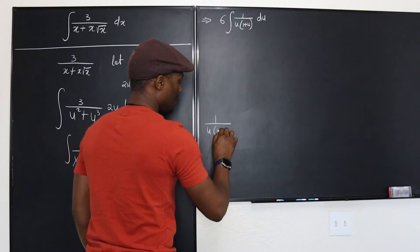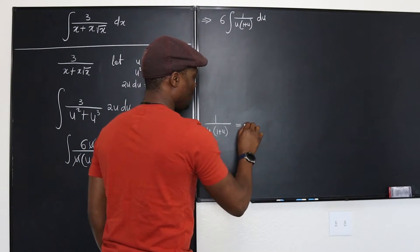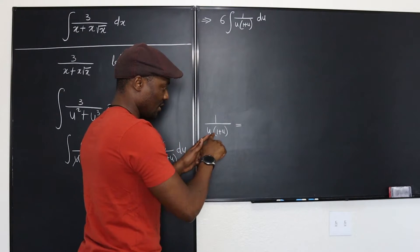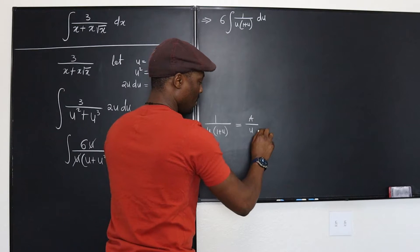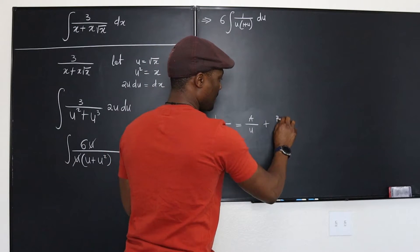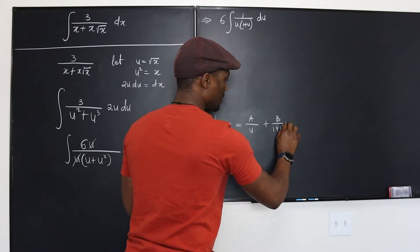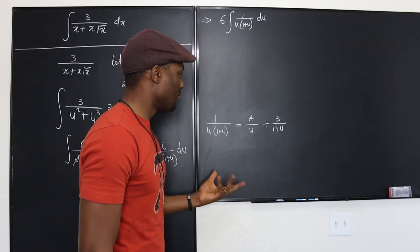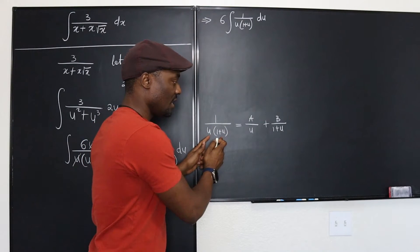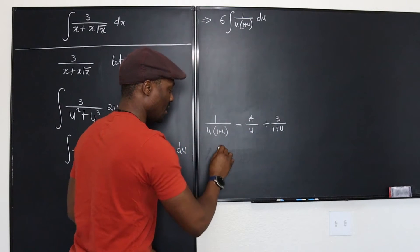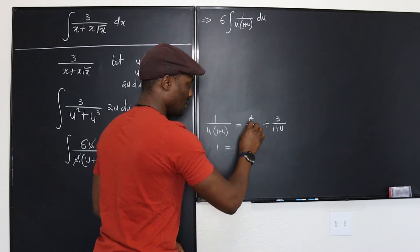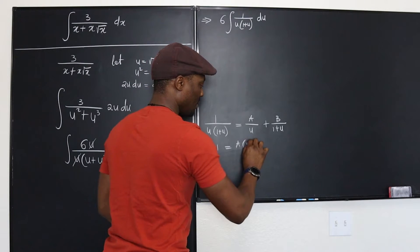At this point we're going to resolve 1 over u into 1 plus u into partial fractions. It means these are two terms multiplying each other: A over u plus B over 1 plus u. Since this is the least common multiple, we're going to multiply everything by u into 1 plus u. You'll end up with 1 equals A multiplying 1 plus u and plus B multiplying u.